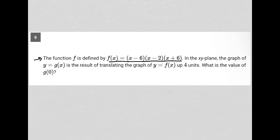So g(x) equals f(x) up 4 units is basically what this is saying. What is the value of g(0)? Okay, so what that means to me is that I should be able to find f(0). And whatever that value is, I should be able to then shift that value up vertically by 4 units. So that's what I'm going to do.